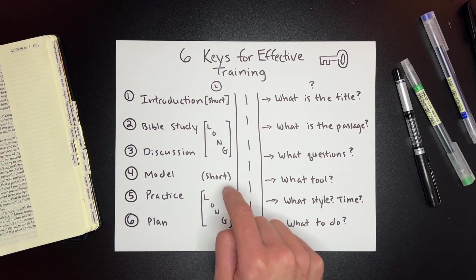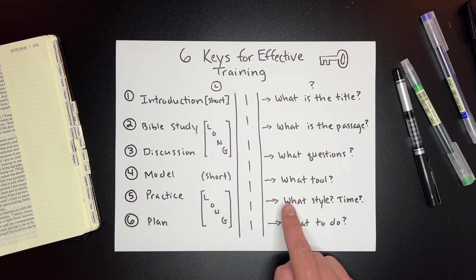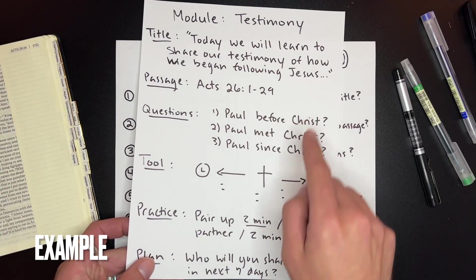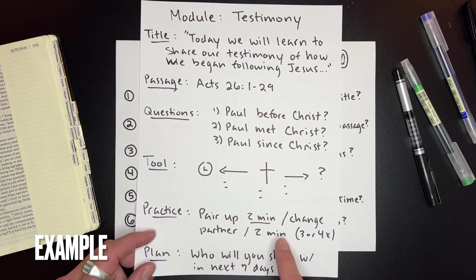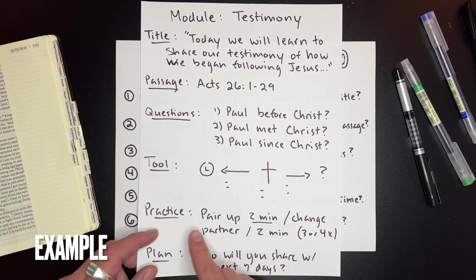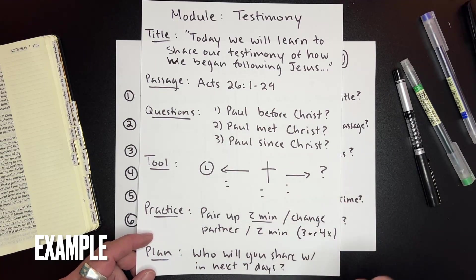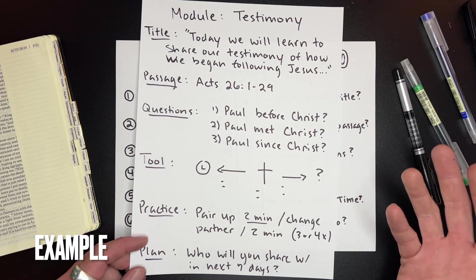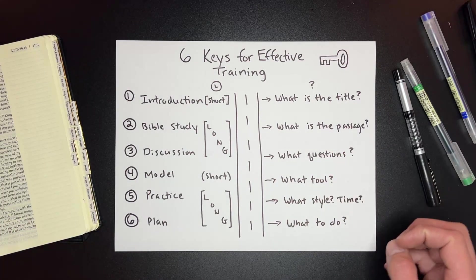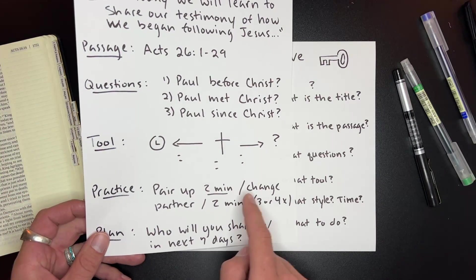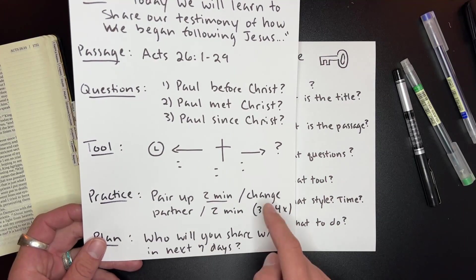After modeling, you have a long period where they practice and make a plan to implement. For the practice, think about what style and how much time they need. For testimony, I have them pair up and practice for two minutes, then change partners and practice again for two minutes — repeating this three or four times. This builds enough confidence and competence practicing with other Christians before they go out and share with non-Christians. Give them plenty of time, and plan in advance how many times they need to switch partners.